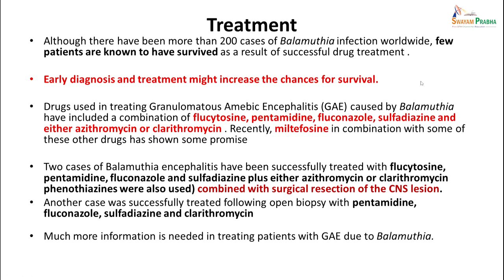Although more than 200 cases have been detected worldwide, few patients are known to have survived. Early diagnosis and treatment is most important for increasing chances of survival. Drugs used for granulomatous amoebic encephalitis caused by Balamuthia include a combination of flucytosine, pentamidine, fluconazole, and sulfadiazine. Azithromycin, clarithromycin, and miltefosine have also been used recently. Two cases have been successfully treated with combinations of these drugs along with surgical resection of the CNS lesion. Another case was treated successfully with pentamidine, fluconazole, sulfadiazine, and clarithromycin, but much more information is needed for treatment of these cases.